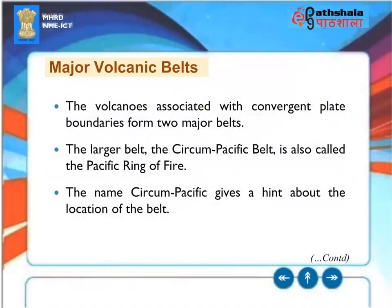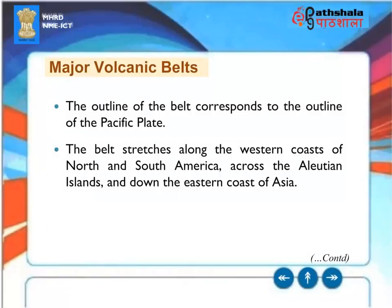Volcanoes associated with convergent plate boundaries form two major belts. The larger belt — the circum-Pacific belt — is also called the Pacific Ring of Fire. The outline of the belt corresponds to the outline of the Pacific plate. The belt stretches along the western coasts of North and South America, across the Aleutian Islands, and down the eastern coast of Asia.